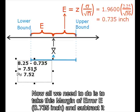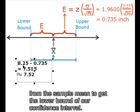Now all we need to do is take this margin of error E, 0.735, and subtract it from the sample mean to get the lower bound of our confidence interval.